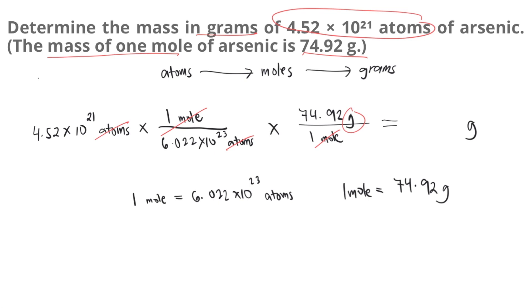So grab your calculator. That's 4.52 times 10 to the 21 times 1 divided by 6.022 times 10 to the 23 times 74.92 divided by 1. The mass of arsenic in grams is 0.562 grams. This is the answer to the question.